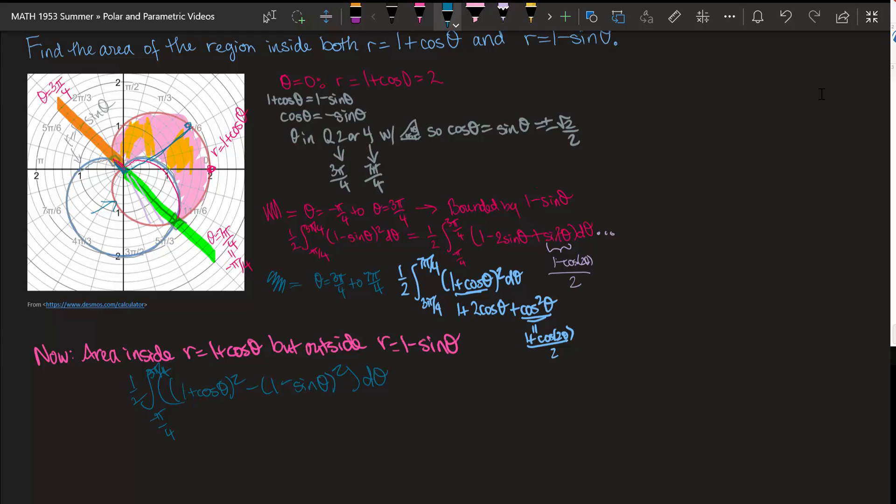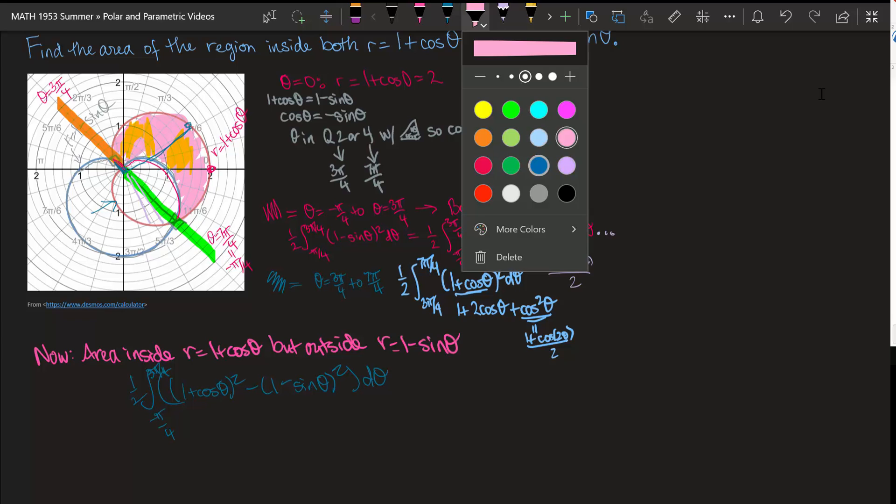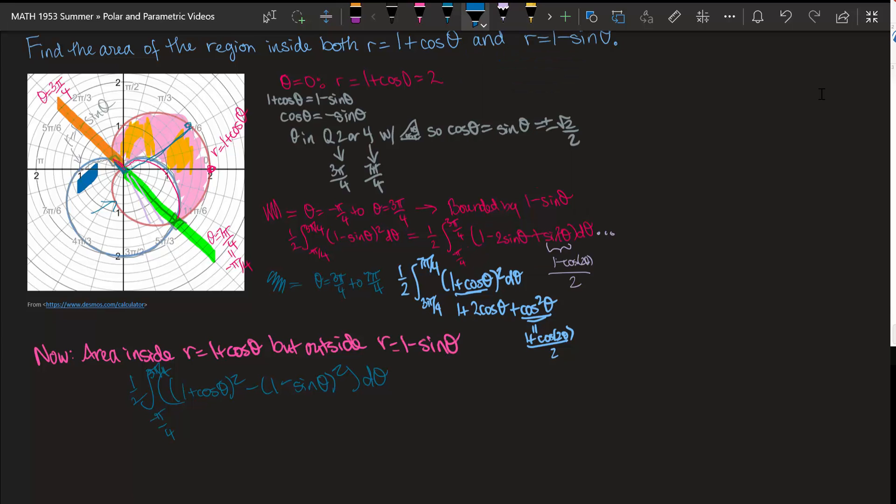And then I could have the mirror thing of, say, now we also wanted to find this region. So maybe I want the part that's only inside one of them. Notice in that region, I have the outer curve is the one minus sine theta curve, but that every single line I draw out will have that property. And that is how you would solve these area problems.